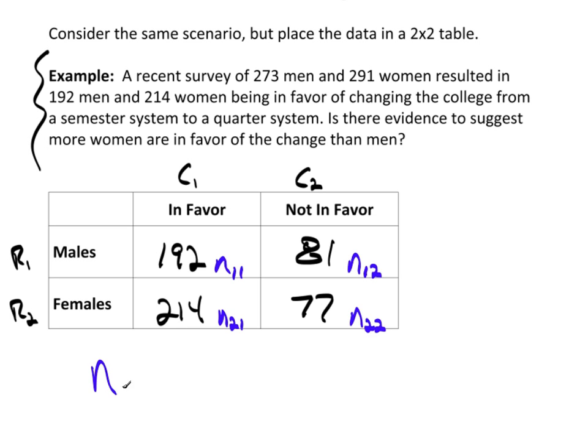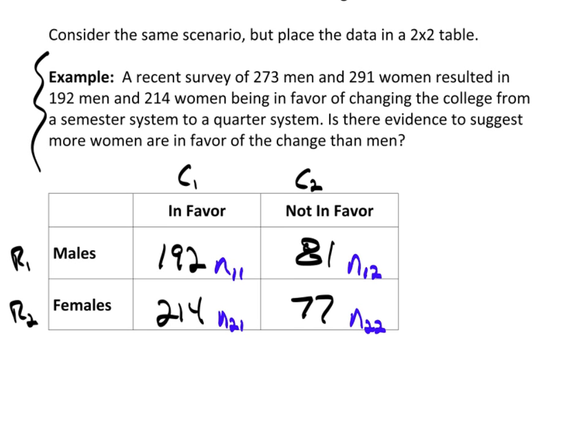Now, these notations, this NIJ, this is the row number, and this is the column number. So, N11 refers to the number in row one, column one. N21 is row two, column one, and so forth. This notation will be important when we start playing around in TC stats. And it'll help for the general explanation for the odds ratio.